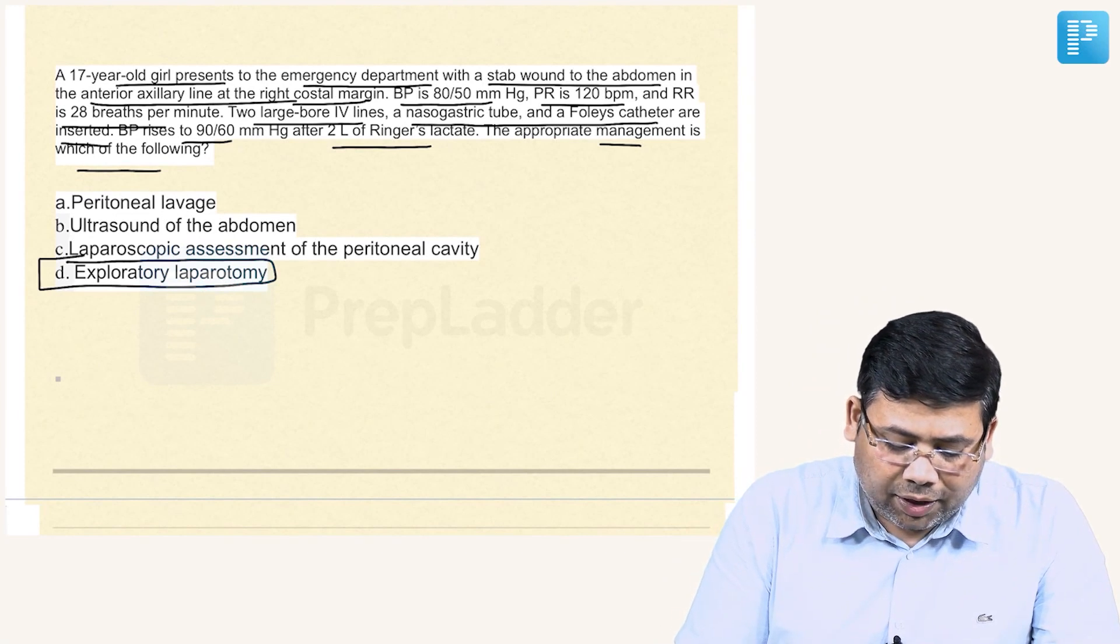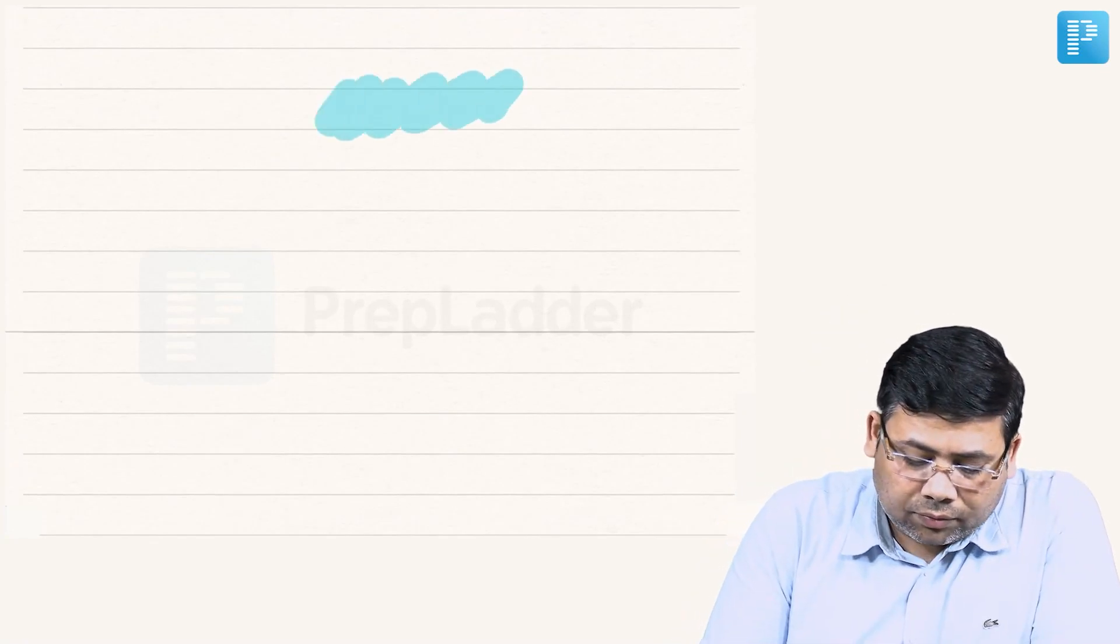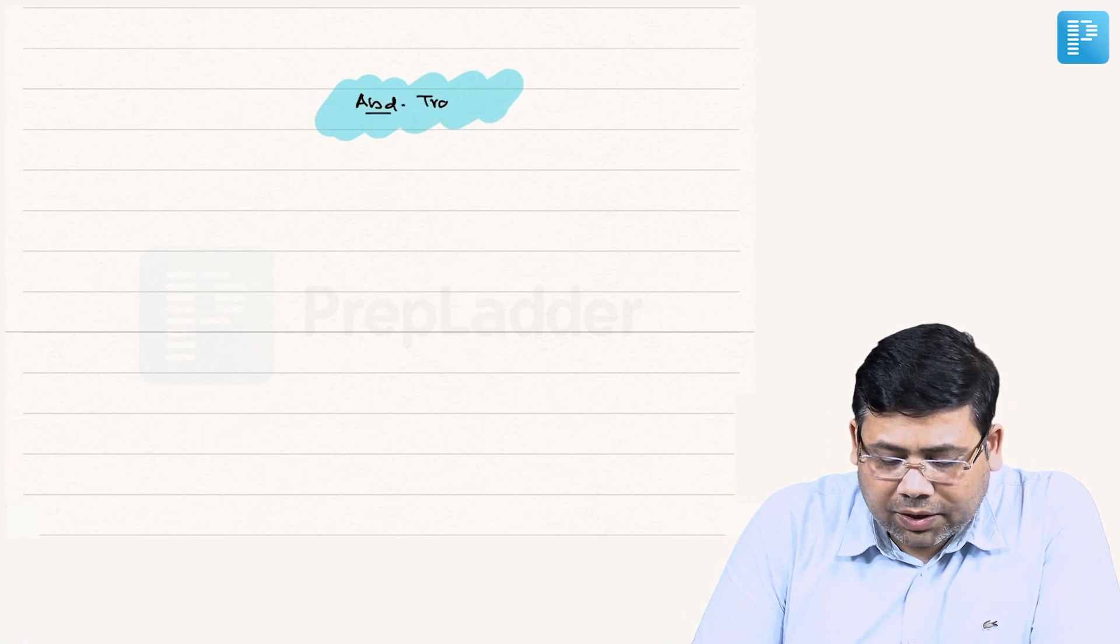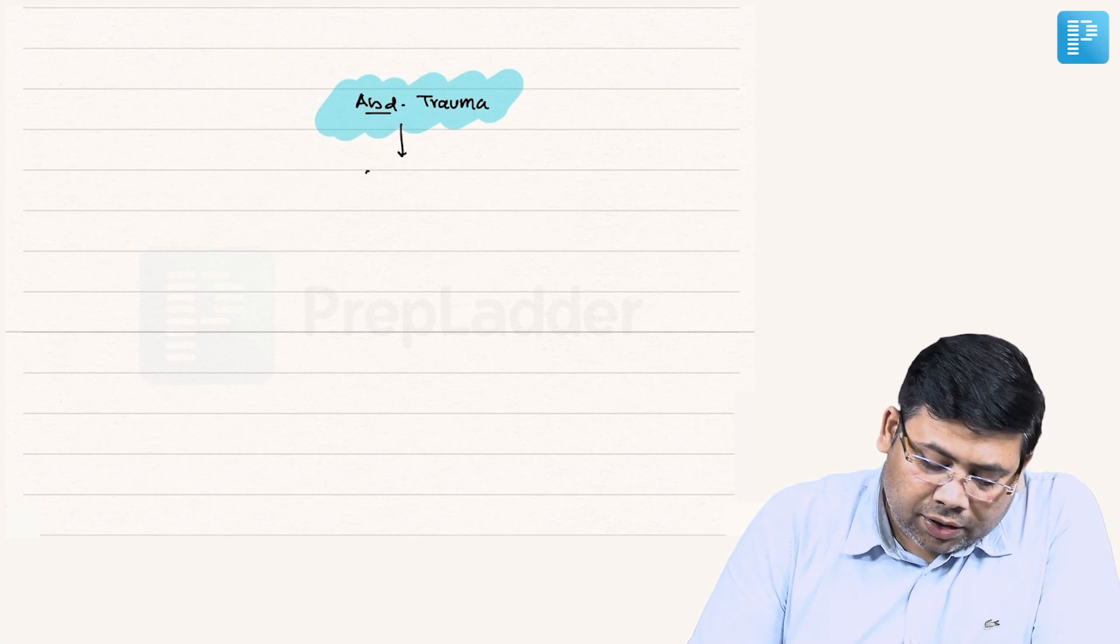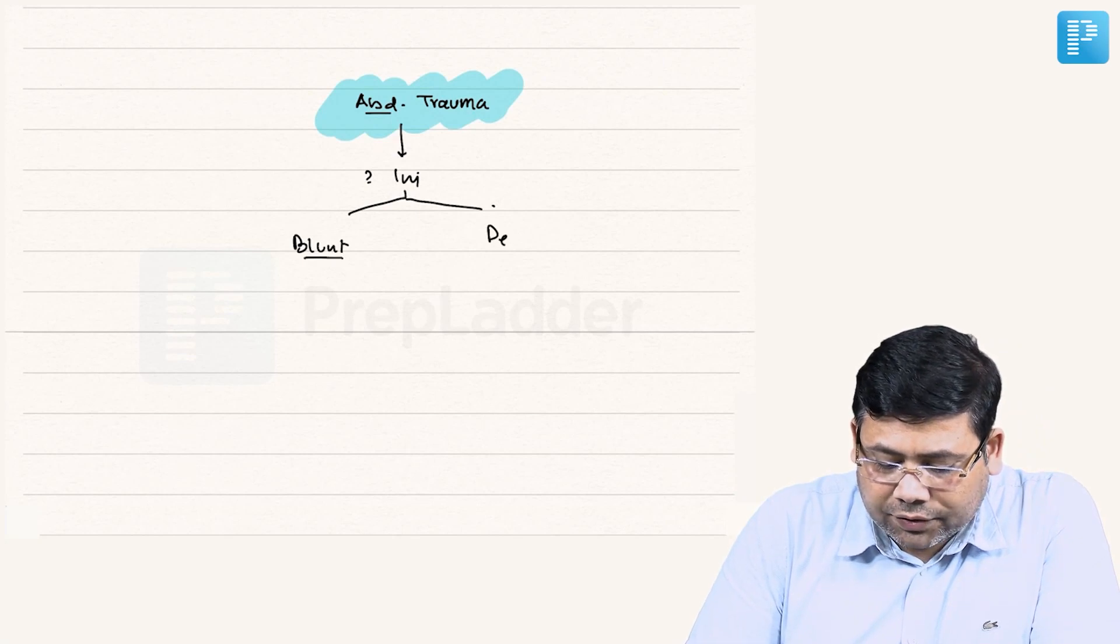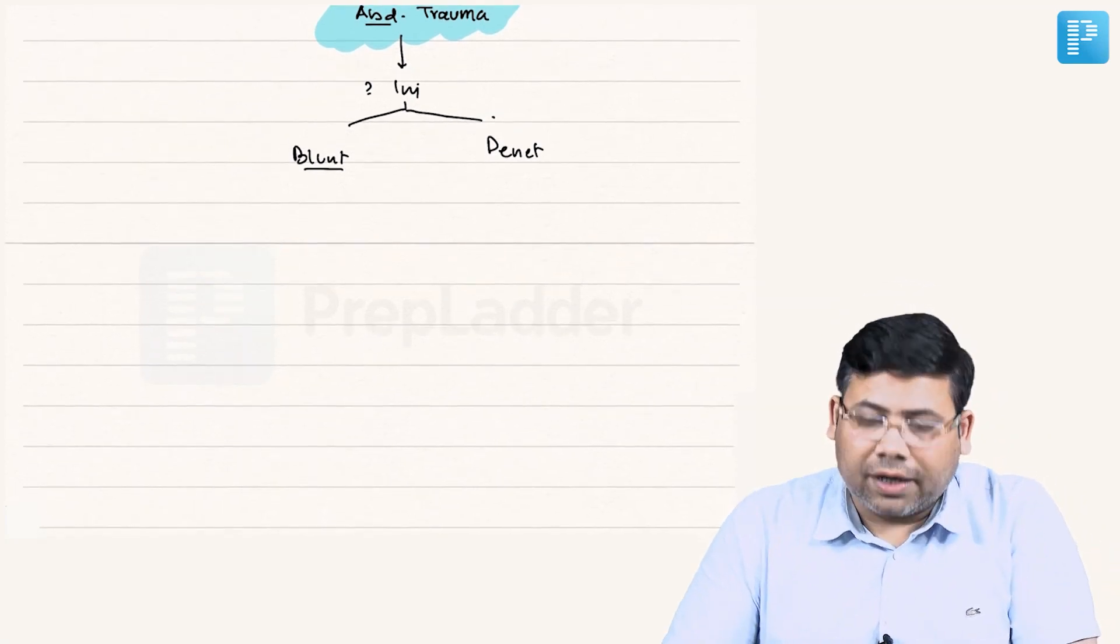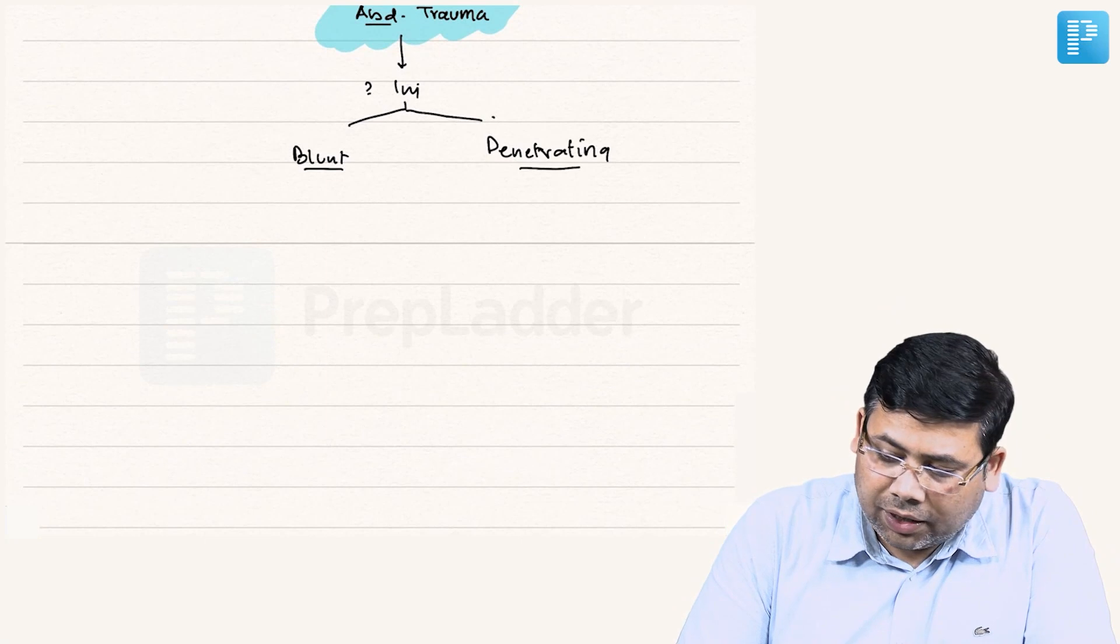I will tell you the approach for this question also. Whenever we talk about abdominal trauma, the concept is very simple and straightforward. You have to see what kind of injury it is, whether it is blunt or whether it is penetrating injury. If it is a case of penetrating injury, the next very simple concept is whether the patient is stable or whether the patient is unstable.